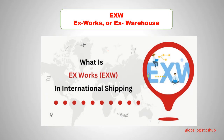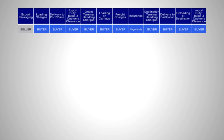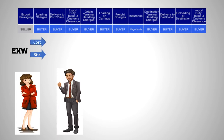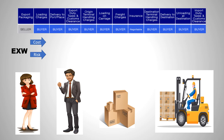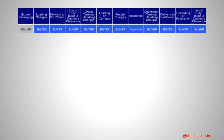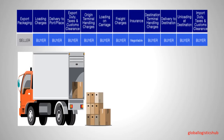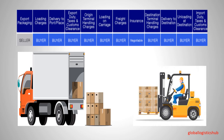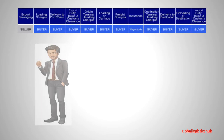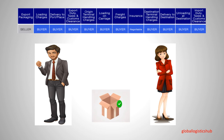Let's start with the first Incoterm: EXW, which means Ex Works or Ex Warehouse. In EXW, the seller is only responsible for ensuring that the cargo is packed and ready for export, and the goods can be collected from the location. The risk or liability for the goods transfers to the buyer when the goods are available at the agreed-upon place. The buyer bears all risks and costs once they collect the goods from the seller's location. By applying this rule, neither party is required to make an insurance contract.